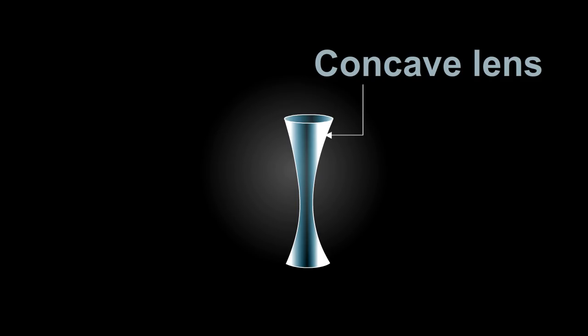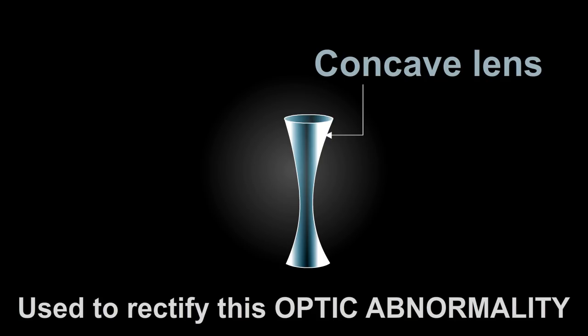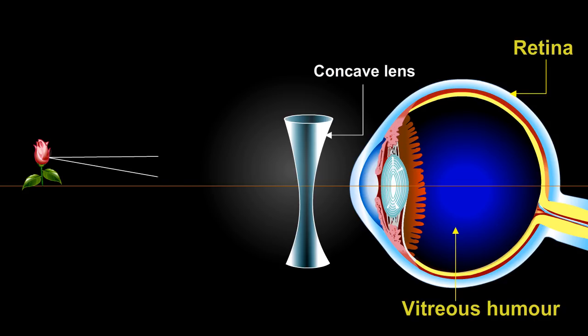A concave lens is used to rectify this optic abnormality. The ray diagram shows how a concave lens helps in focusing the light on the retina.